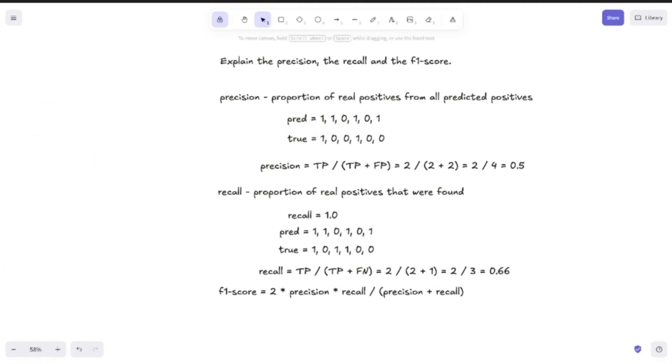Now one follow-up question would be: why would we use these metrics and not the accuracy? And the answer to that is pretty straightforward.